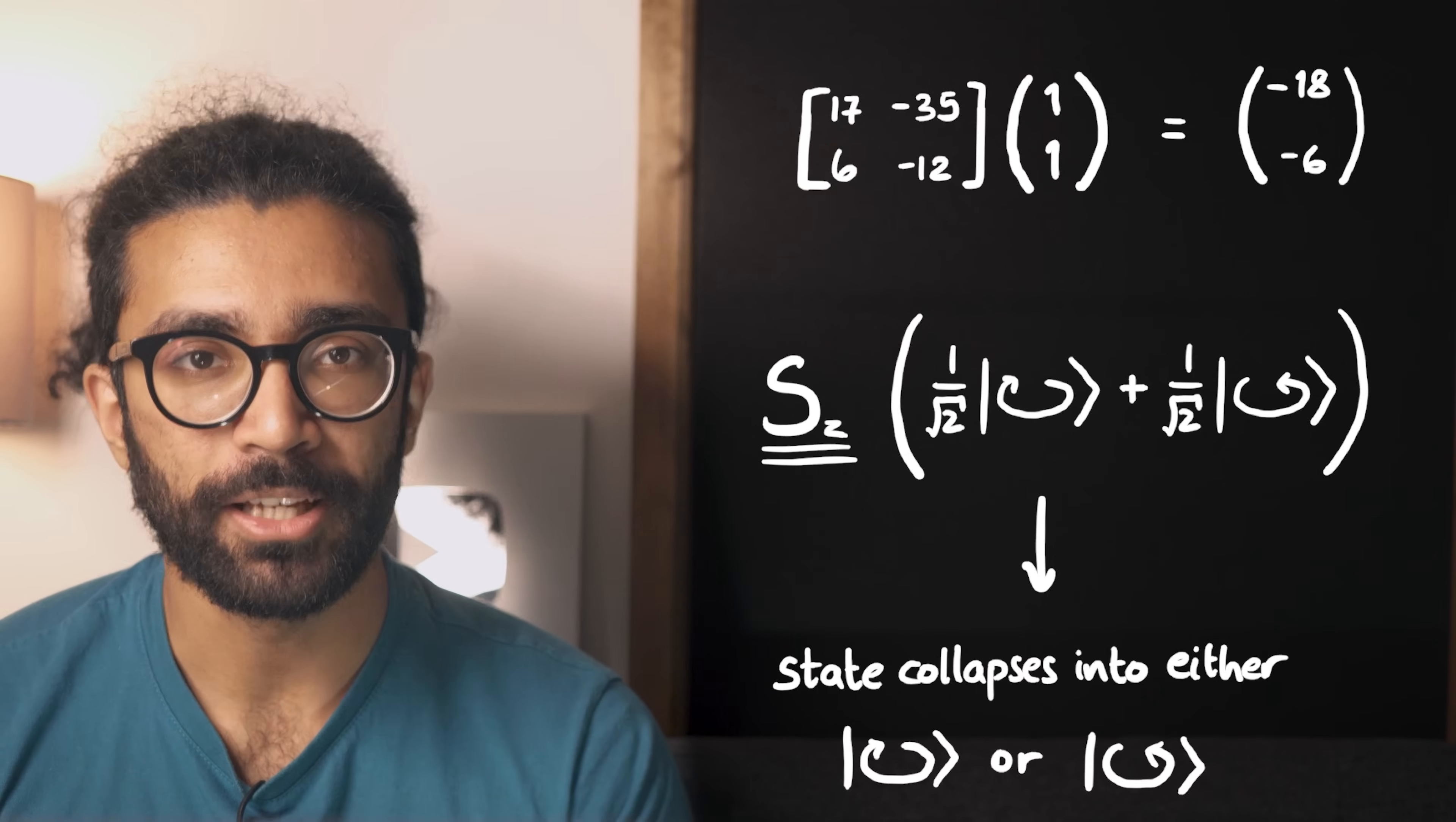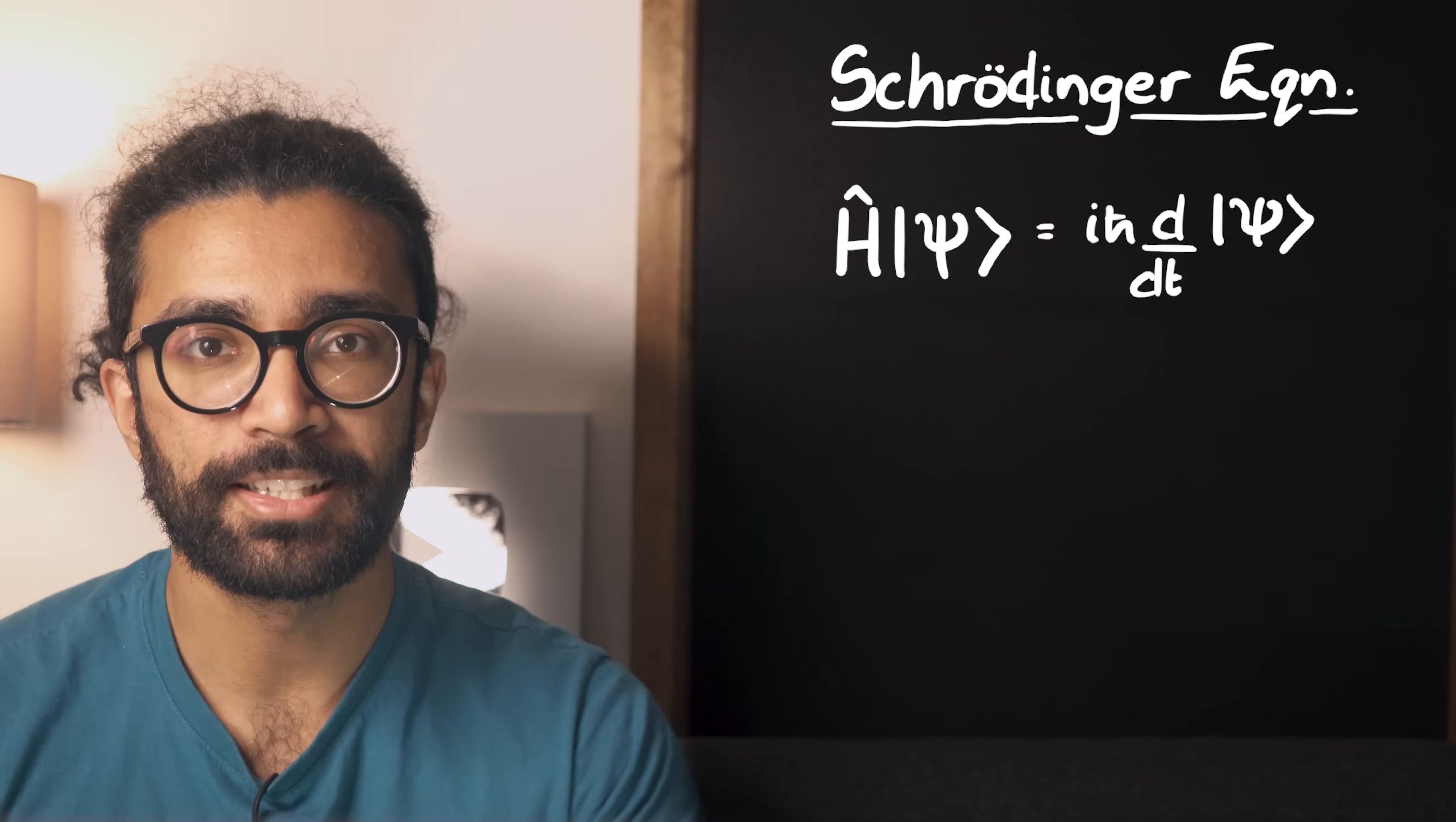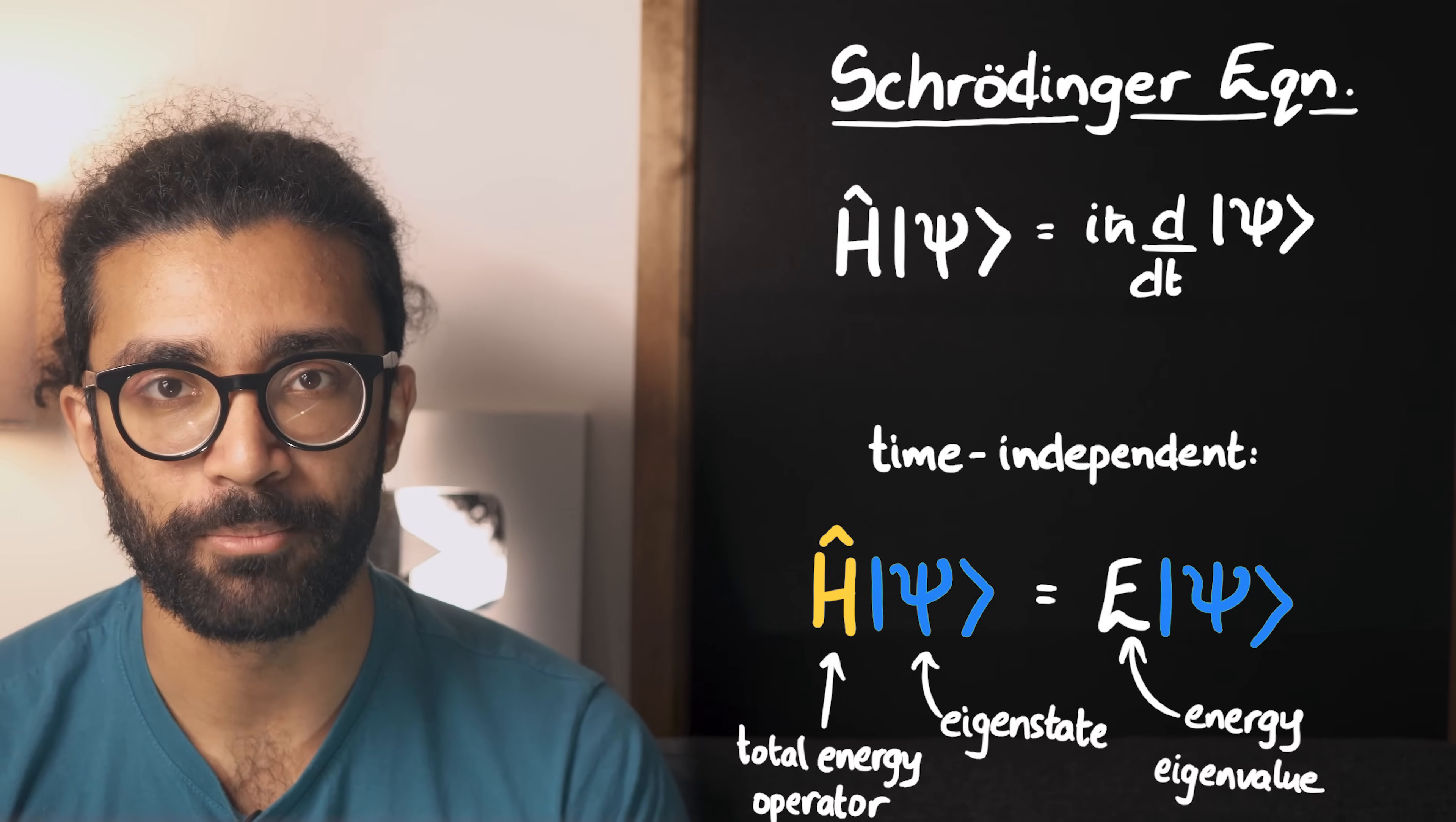I'd also like to bring up here that the Schrödinger equation, the one that I said was the most important in quantum mechanics, can also be written as a type of eigenvalue equation. When our system is not changing over time, we can write the time-independent Schrödinger equation, which looks like this. This operator measures the total energy of the system, and this is the numerical energy value that we measure. Psi are the various eigenstates that we can measure.